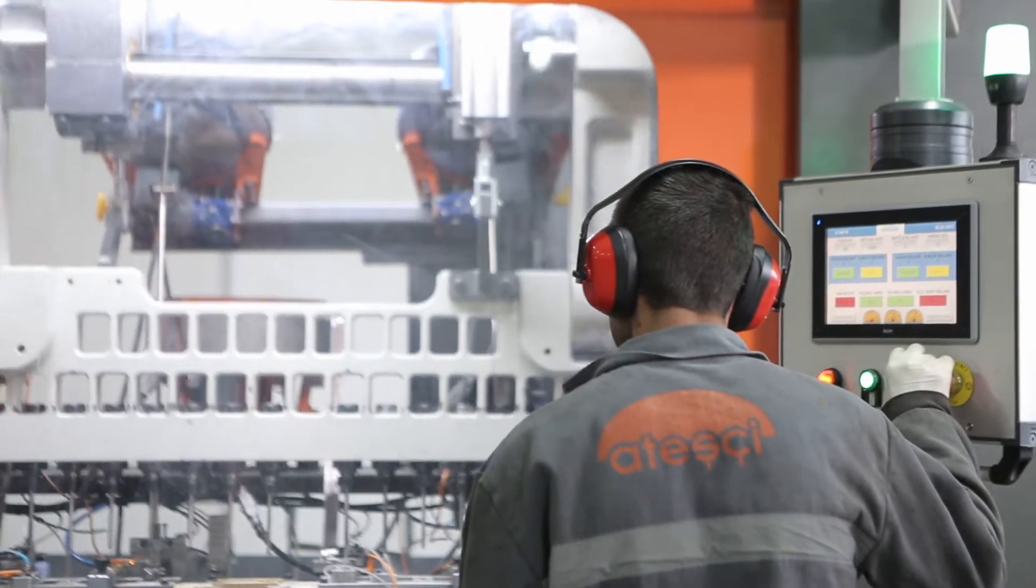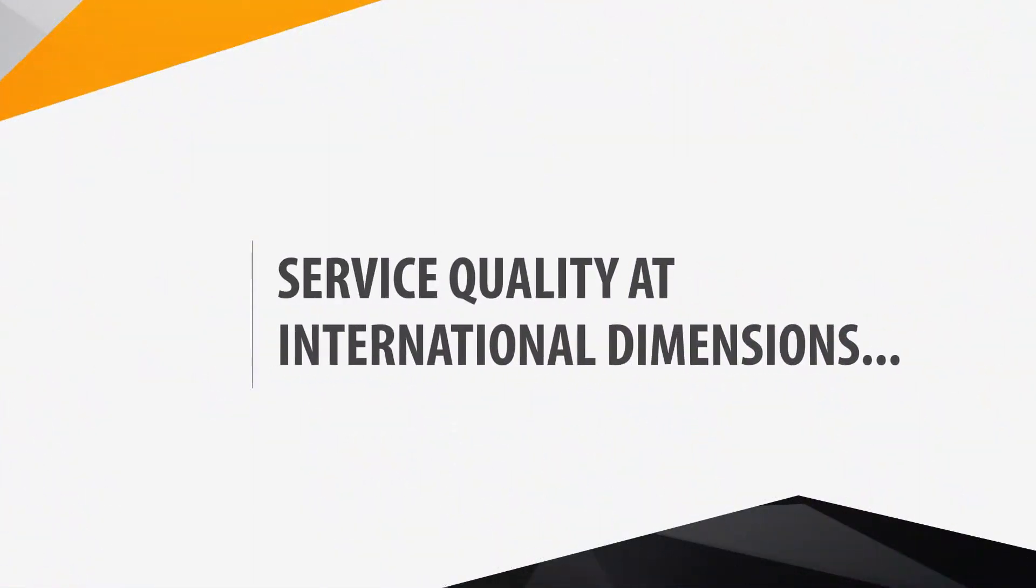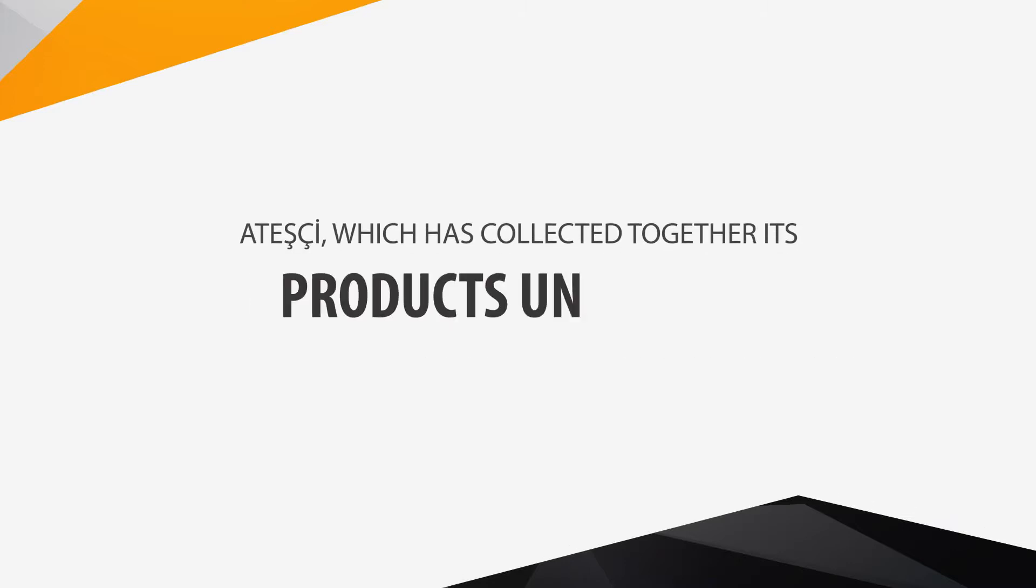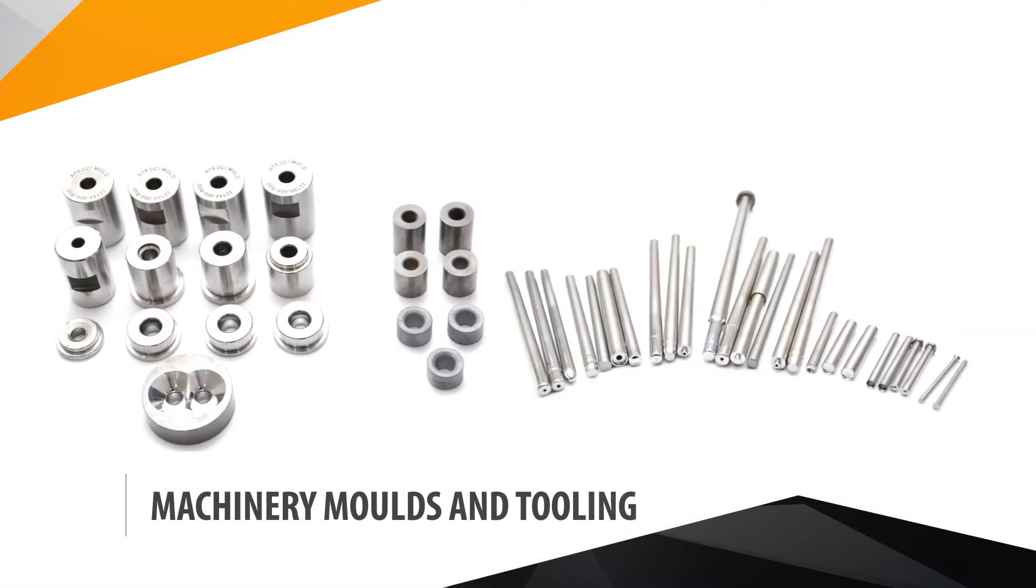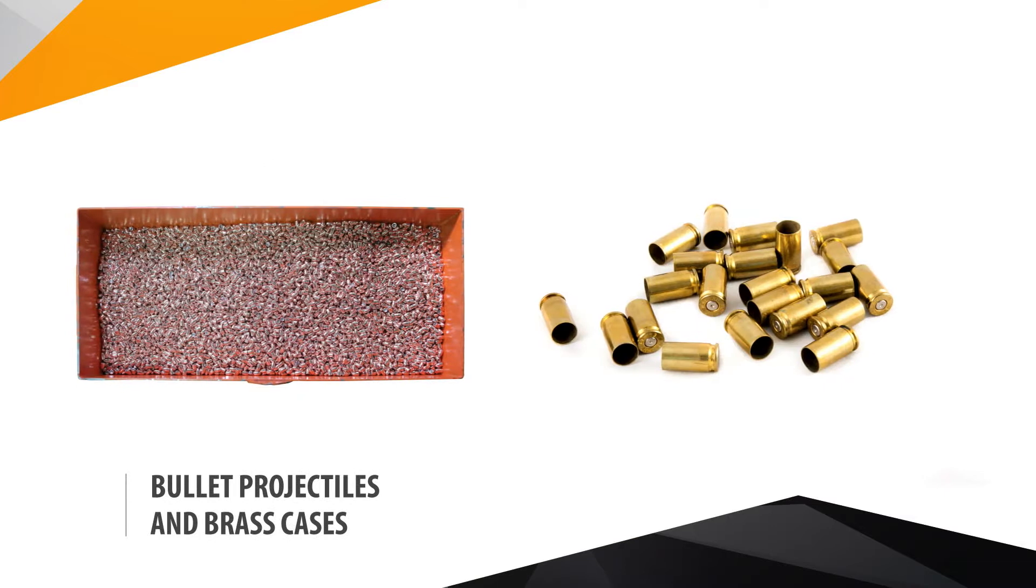Ateschi offers service quality at international dimensions and has collected its products under five main headings: machinery, molds and tooling, bullet projectiles and brass cases,